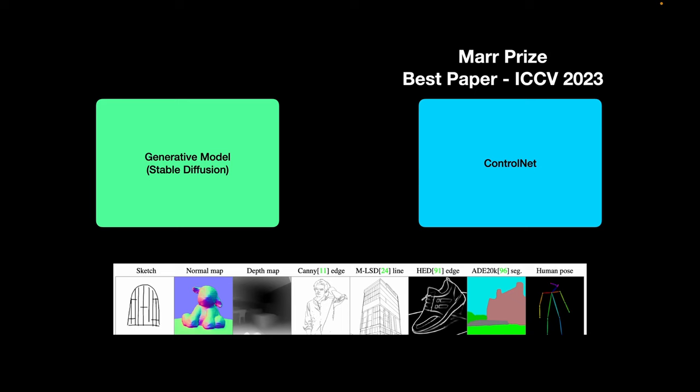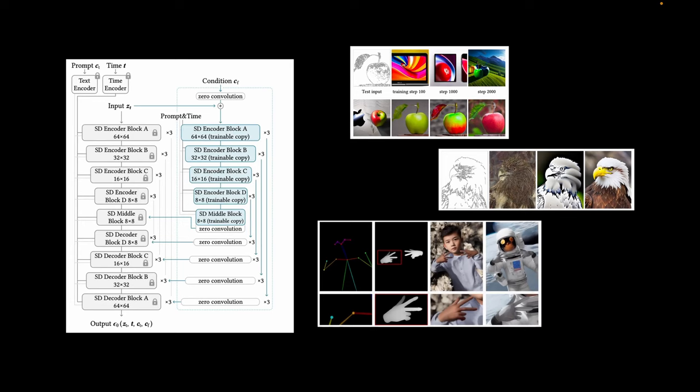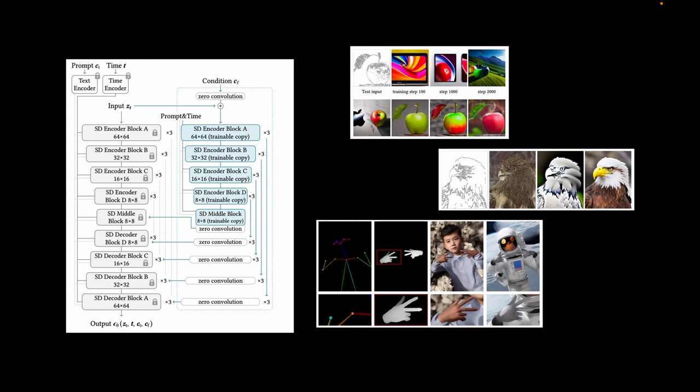No wonder ControlNet got the prestigious Marr prize at the ICCV conference 2023. And the impact on the community can already be felt by over 730 citations to this paper. So in this video, let's look at the ControlNet architecture, the zero initialization technique, the qualitative results along with some ablation studies.